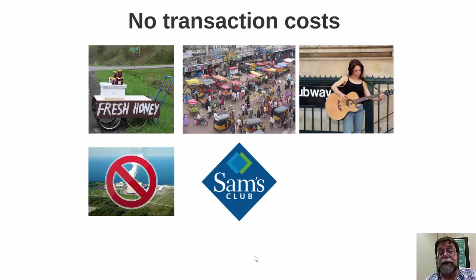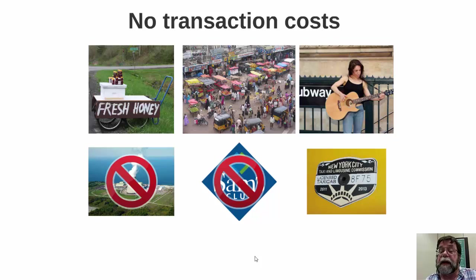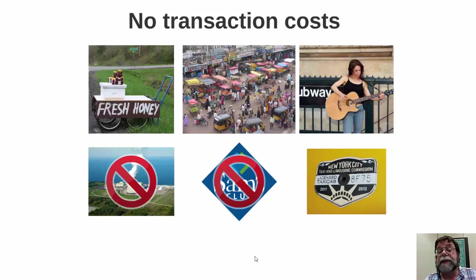In other cases, there's an explicit charge for entering the market as a seller. For example, if you want to operate a taxi cab in New York City, you have to have a taxi medallion, and you can't legally operate without one. The current cost of these medallions is approximately a million dollars, so the cost of entry is non-trivial.